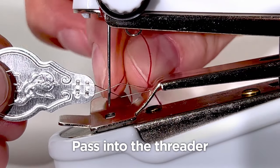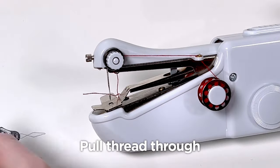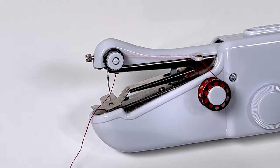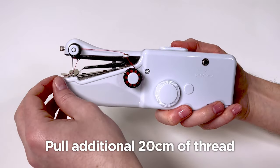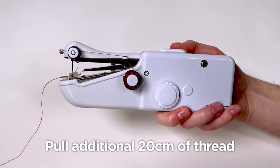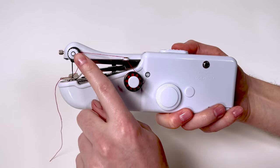Secondly, you will push your thread through the threader. And finally, you need to pull the thread through the eye of the needle using the threader. Now you have threaded your magic stitch, we recommend pulling the thread further through, so you have additional thread for later on.